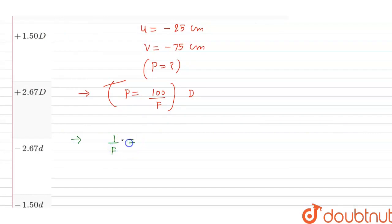1 by f equals, using lens formula, 1 by f equals 1 by v minus 1 divided by u. 1 divided by v is minus 75 minus 1 divided by minus 25 equals 1 divided by 25 minus 1 divided by 75.